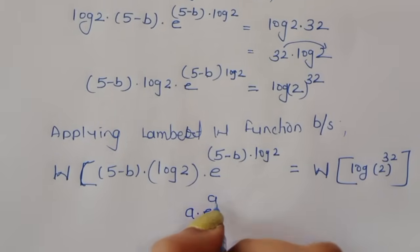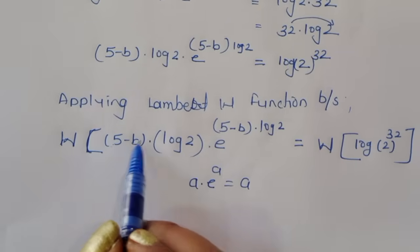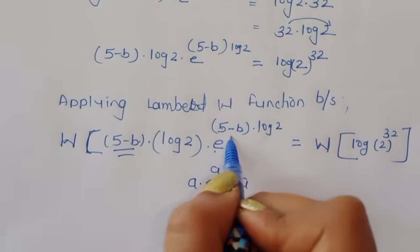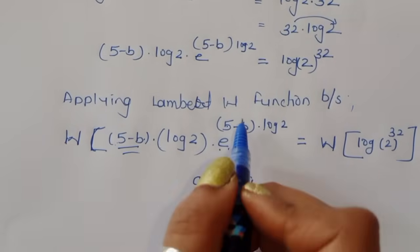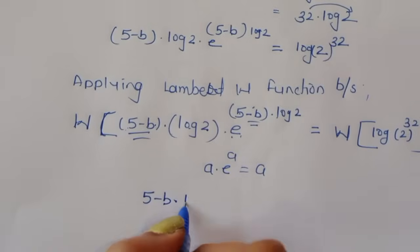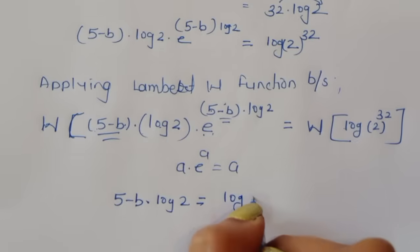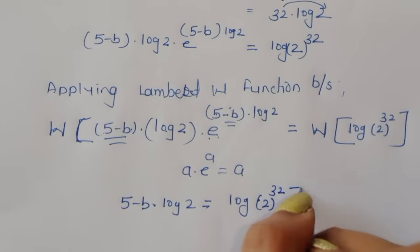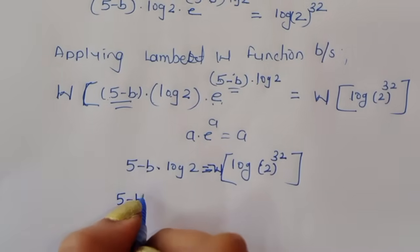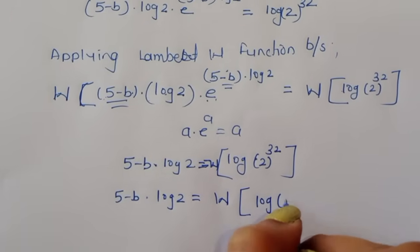We know that W of a times e power a equals a. Here the term 5 minus b times log of 2 plays the role of a, and the rest is e power a. So the left side simplifies to 5 minus b times log of 2 is equal to W of log of 2 to the power 32.